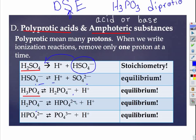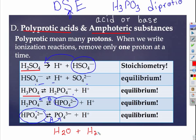This is an intermediary species: in this direction it's acting as a base, and down here the same substance is acting as an acid. A common amphoteric substance is water. If I have two water molecules present, one can donate an H⁺ to the other. If this one loses an H and a plus, I have OH⁻; if this one gains an H and a plus, I have H₃O⁺. So water is considered amphoteric.